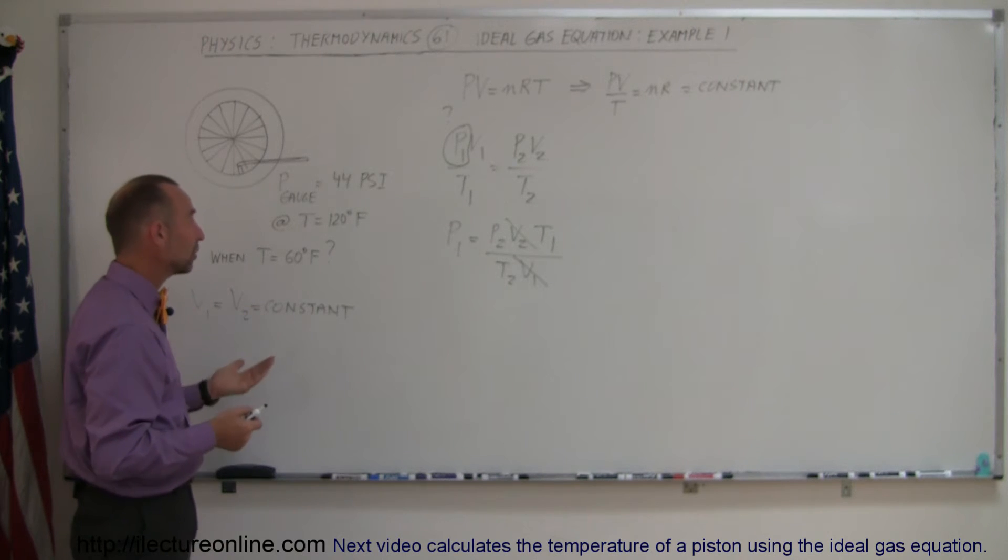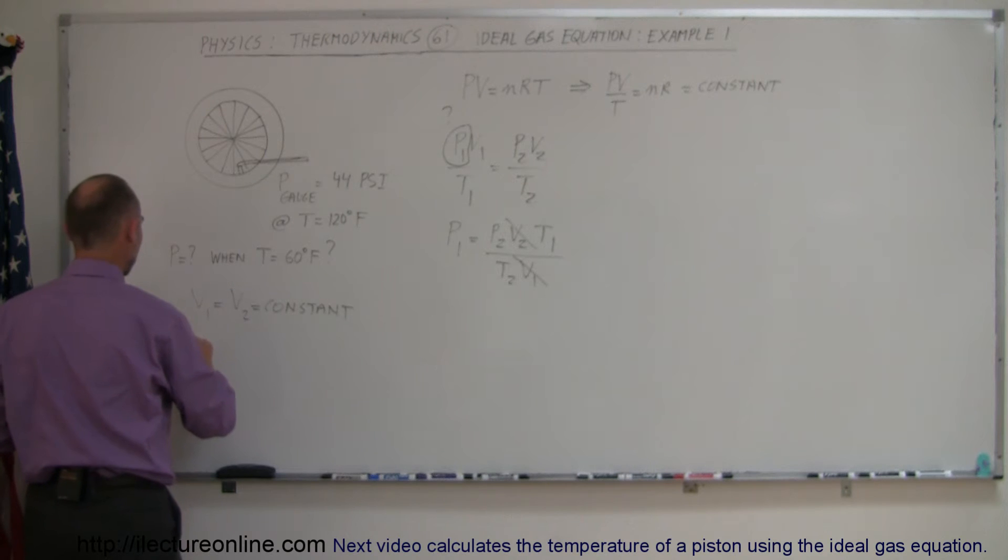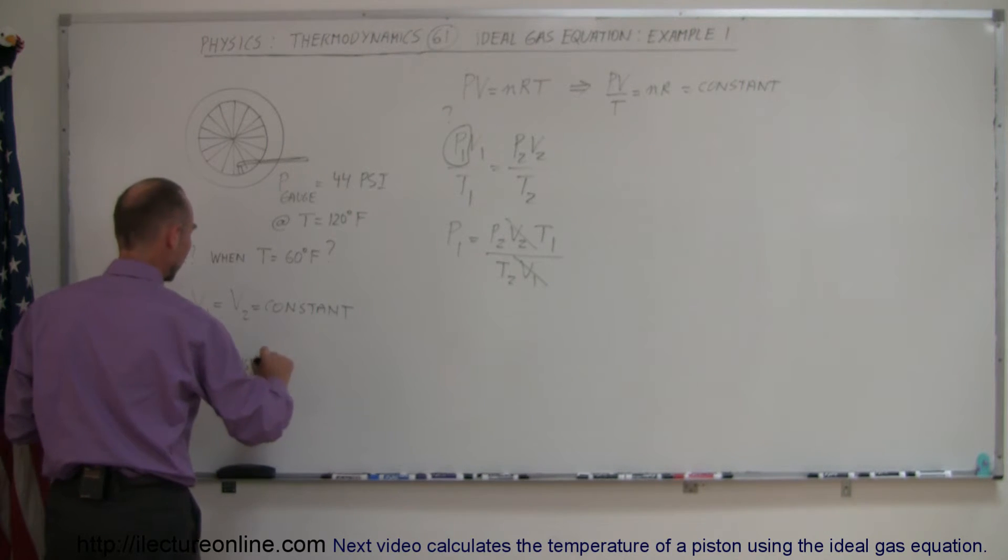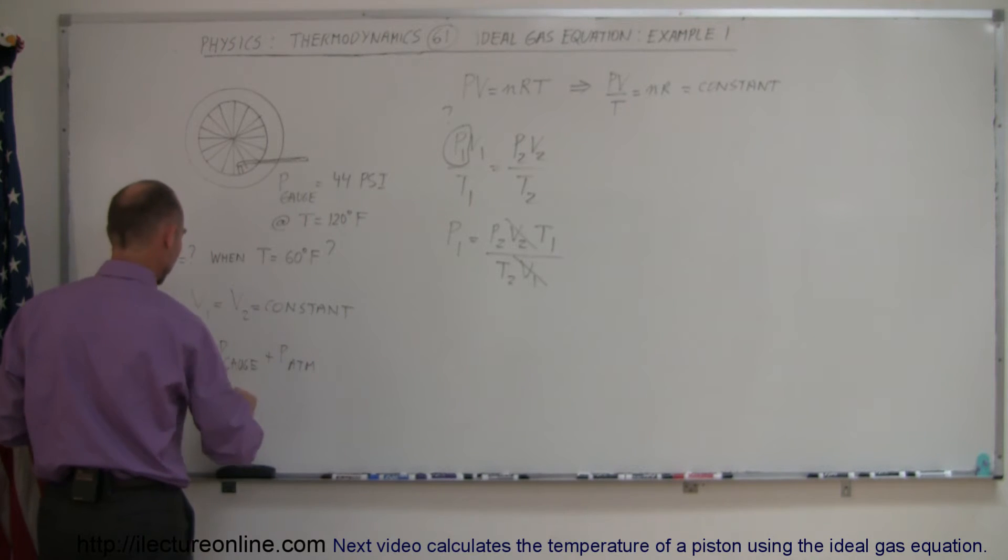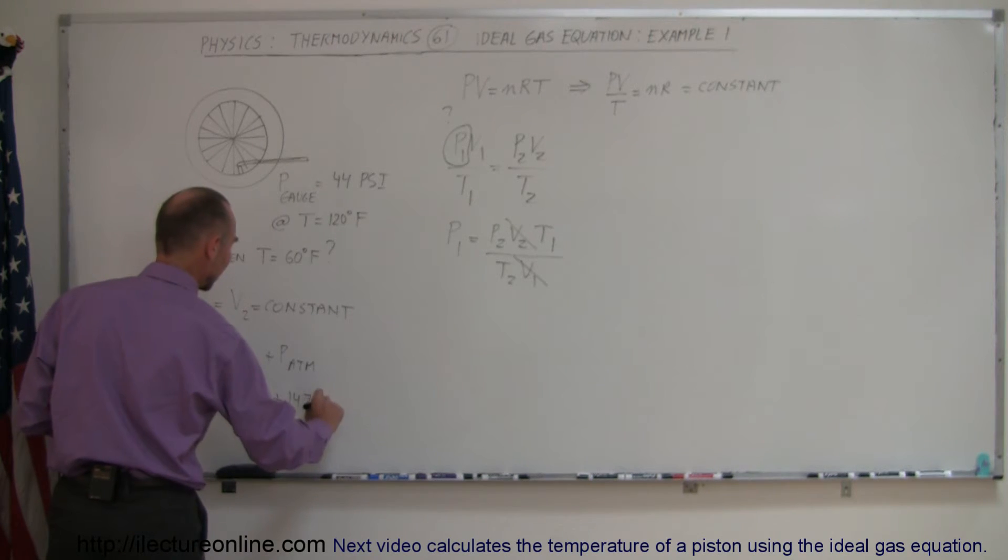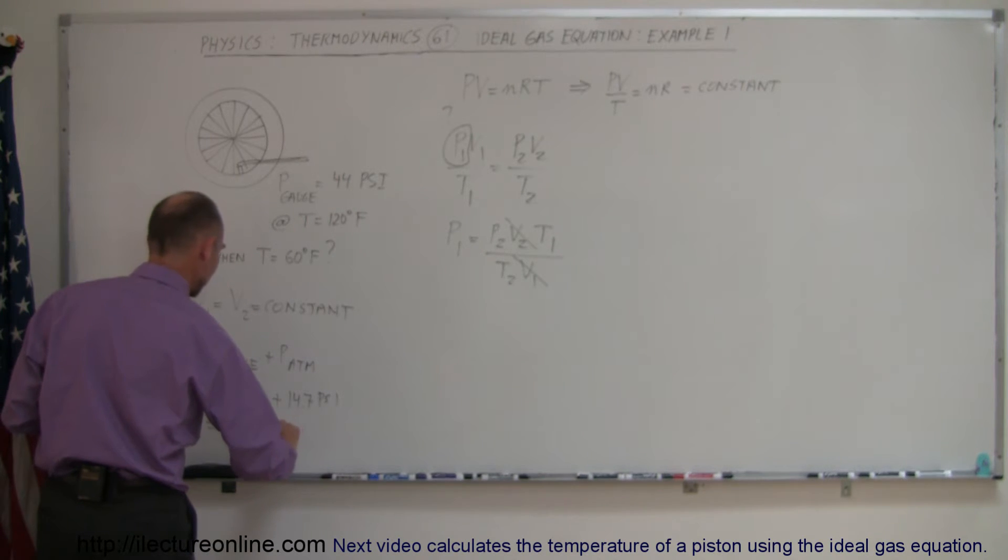Total pressure is equal to gauge pressure plus atmospheric pressure, which means that P total is equal to P gauge plus P atmosphere, which means that the gauge pressure was 44 psi, and we have to add to that 14.7 psi for the atmospheric pressure, so this is a total pressure of 58.7 psi.